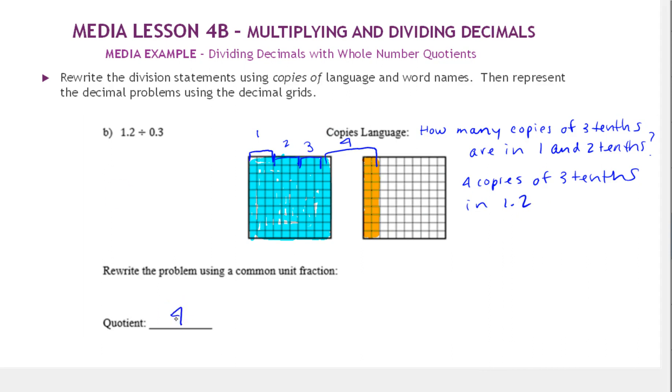And notice we were doing something similar. We could think of having 12 tenths. So it's 1 and 2 tenths, but we could think of it as 12 tenths. And then we group them into copies of size 3 tenths. So 12 tenths divided by 3 tenths.